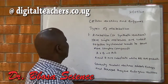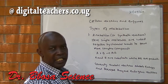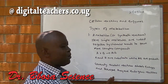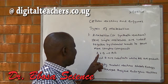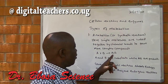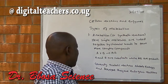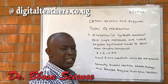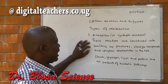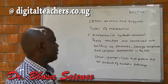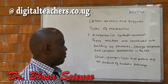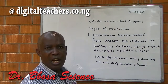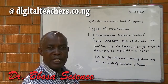Types of metabolism. One, we have anabolic or synthetic reactions. Here, simple molecules are linked together by chemical bonds to form more complex compounds. For example, substrate A is added to substrate B to form the product which is AB. Generally, anabolic reactions absorb energy — they are called endogenic reactions. Anabolic reactions are concerned with building up structures, storage compounds, and complex metabolites in the cells. For example, starch, glycogen, lipids, and proteins are all products of anabolic pathways.